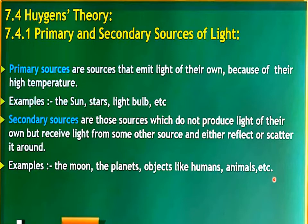Examples of primary sources include stars and torchlight — all these are primary sources. Secondary sources are those sources which do not produce light of their own, but receive light from other sources.